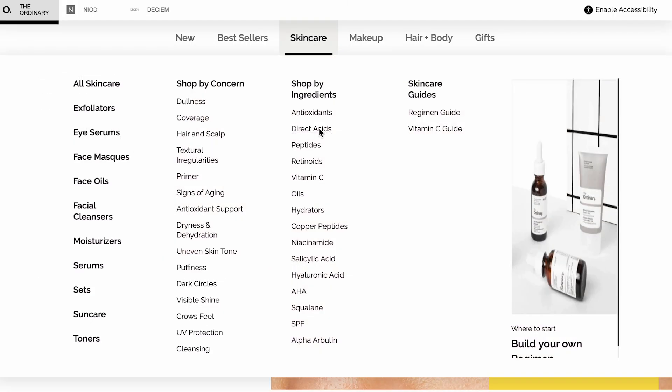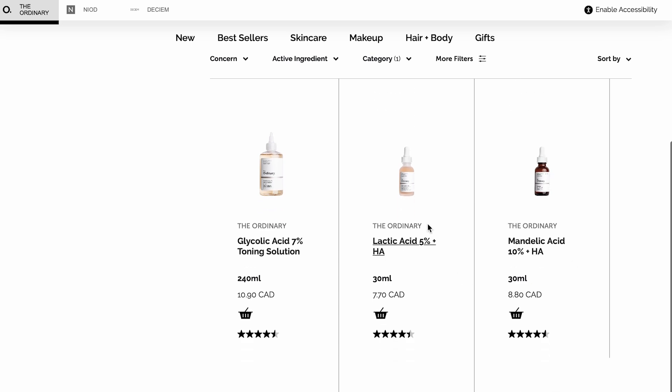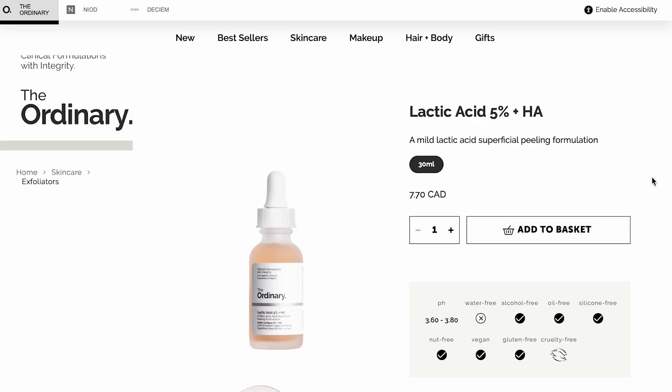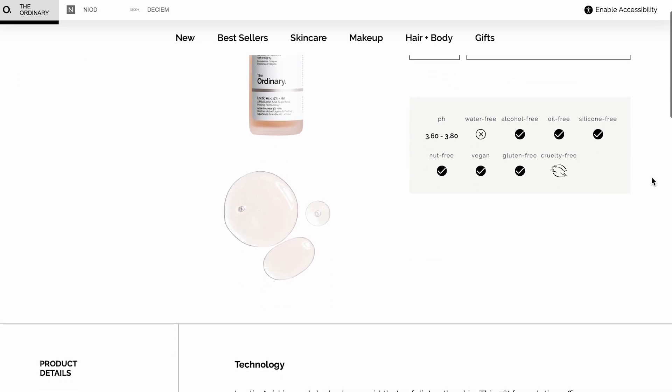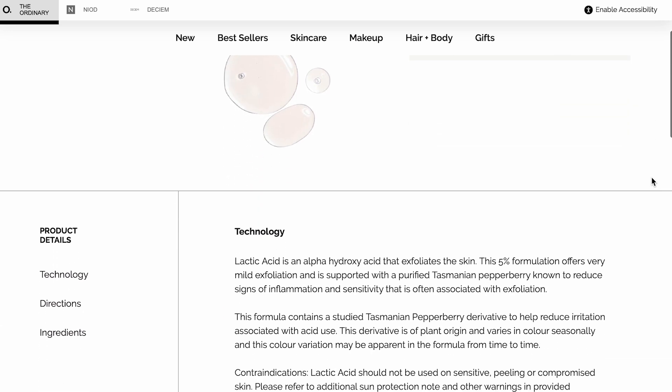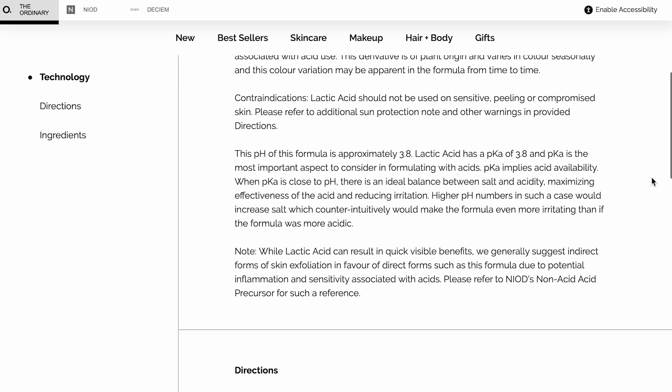If you'd like to try a similar product but you don't want to make it, The Ordinary makes a 5% Lactic Acid and Hyaluronic Acid Solution that is the same strength as this one, and a lovely formulation. It's about 8 bucks, so it's really affordable and a great way to try some lactic acid in your skincare routine if you're not quite ready to make it for yourself yet.